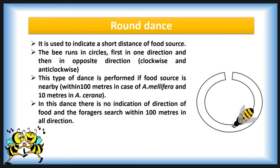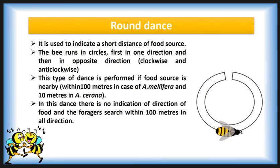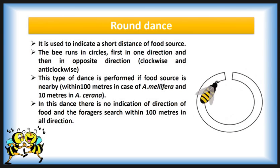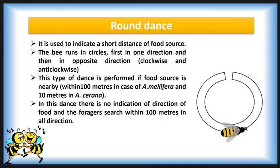In this dance there is no indication of the direction of food, and the forager bees search within 100 metres in all directions. The number of circles formed indicates the distance of the beehive from the food source. The worker dances vigorously if the quantity and quality of food is high; if the food is inferior or the quantity is less, the dance is slow and shorter.